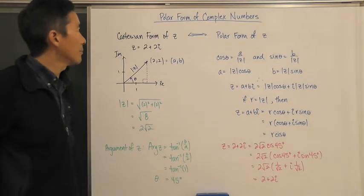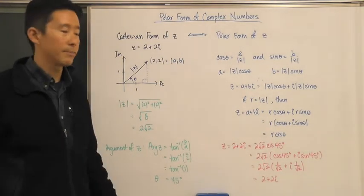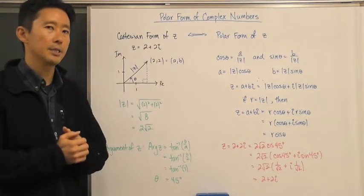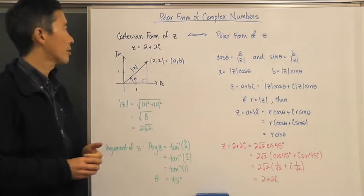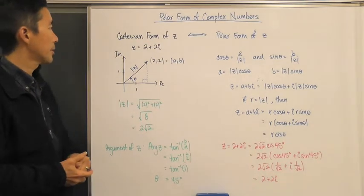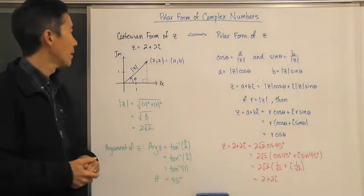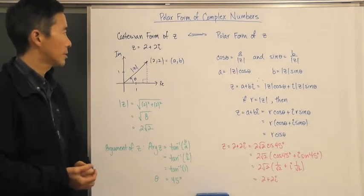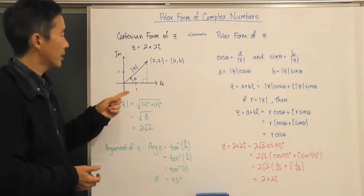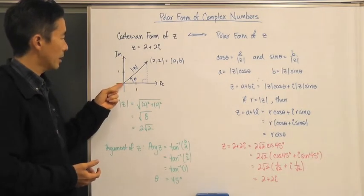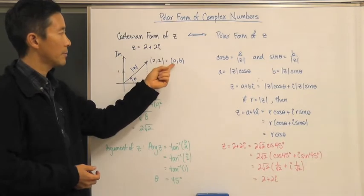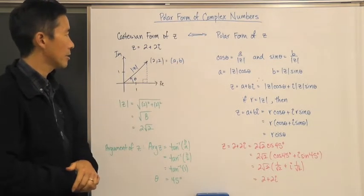Let's take a look at the polar form of complex numbers. Before we dive in, let's make sure we're certain of what our Cartesian form of Z looks like in terms of its components as a vector. Let's take a look at Z which is equal to 2 plus 2i, and if we were to graph that on the Argand diagram, we would have the tail of the vector at the origin, going to the point (2, 2), representing the real part and the imaginary part of that complex number.